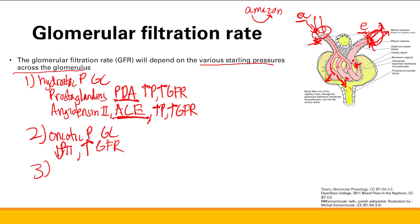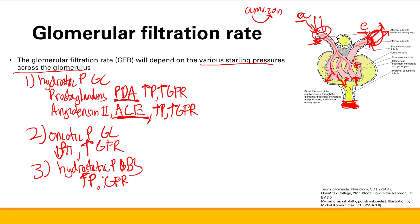Finally, you can have hydrostatic pressure changes in Bowman's space. The main thing that affects this is obstruction of urine flow. If you obstruct urine flow, pressure in Bowman's space goes up. That increased pressure pushes back and decreases GFR — it reduces the propensity of plasma and fluid to flow from the glomerular capillaries into the high-pressure Bowman's space.